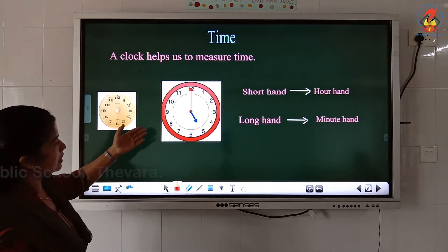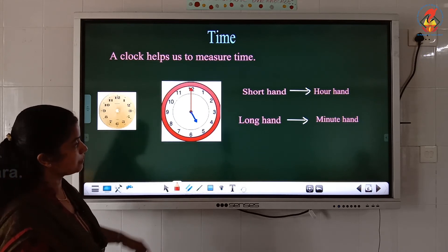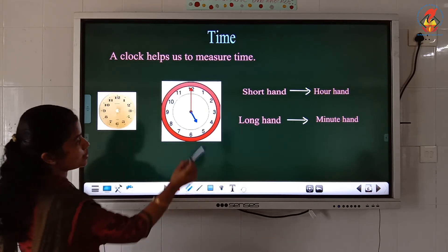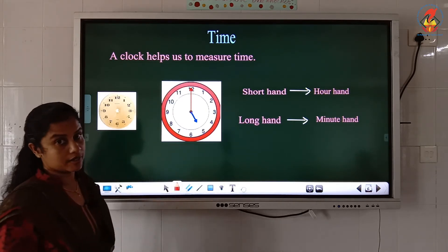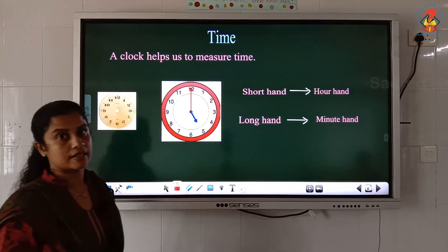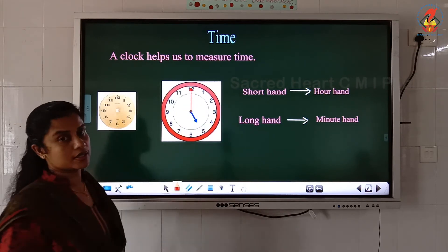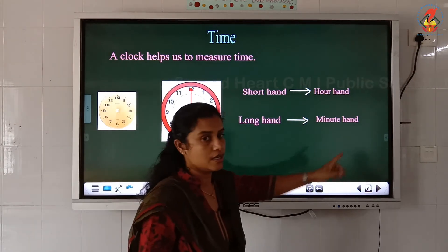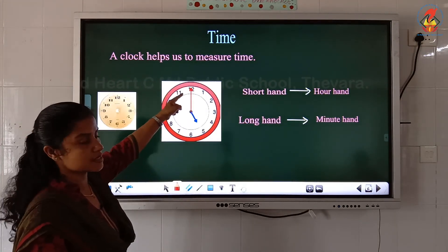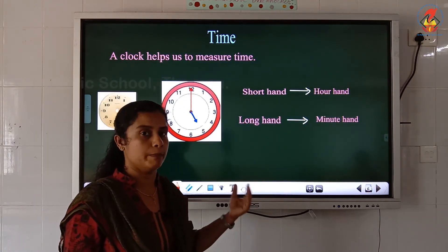Now look here, children. Here you can see two hands on the face of a clock. One is the short hand and the other one is the long hand. The short hand is called the hour hand — it will tell the hours. The long hand is called the minute hand. So short hand is the hour hand and long hand is the minute hand.